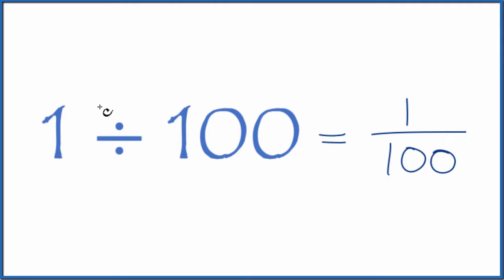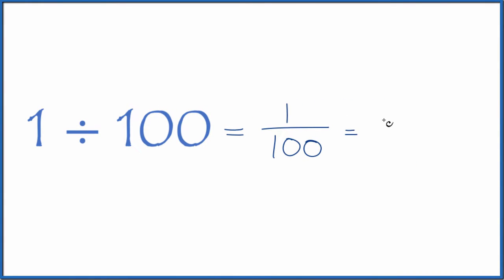You could also take 1 and divide it by 100 on a calculator. So 1 divided by 100 equals 0.01.